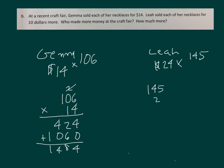Leah has $24 times 145. I'll rearrange those numbers slightly. She should make more. Let's see. 4 times 5 is 20, 0, regroup a 2. 4 times 4 is 16, plus 2 is 18, 8, regroup a 1. 4 times 1 is 4, plus 1 is 5. Place a 0. 2 times 5 is 10, 0, regroup a 1, 2 times 4 is 8, plus 1 is 9, and 2 times 1 is 2. Add those together, $3,480.